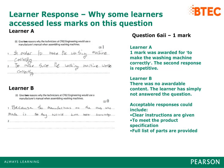Some learners did not score well on the manufacturer's manual question as many responses contained repetition. Learner B received zero marks as there was no rewardable content — the learner was not focusing on the reason for using a manufacturer's manual. Acceptable responses could include 'clear instructions are given', 'to meet the product specification', and 'full list of parts is provided'.